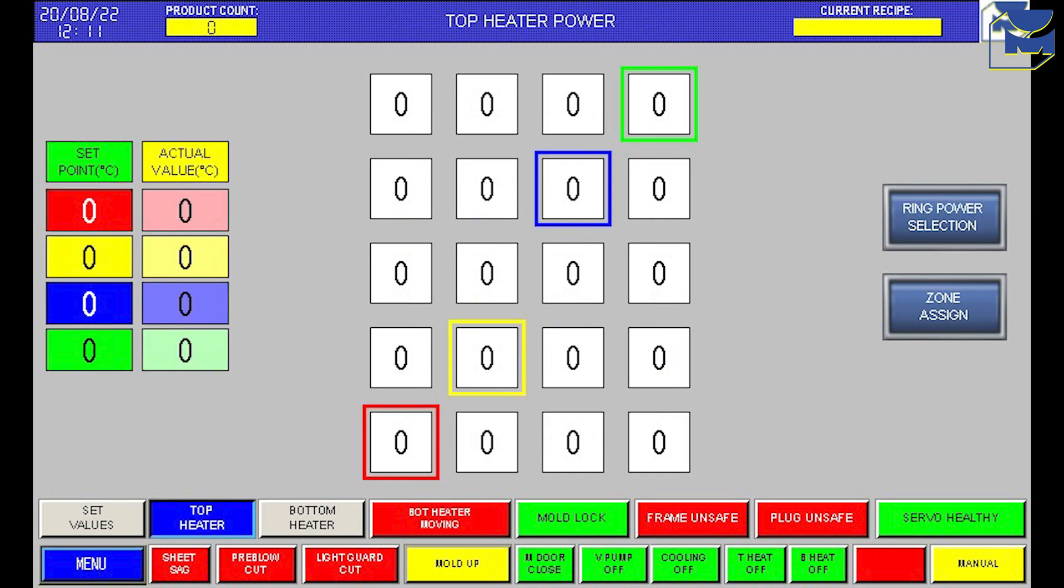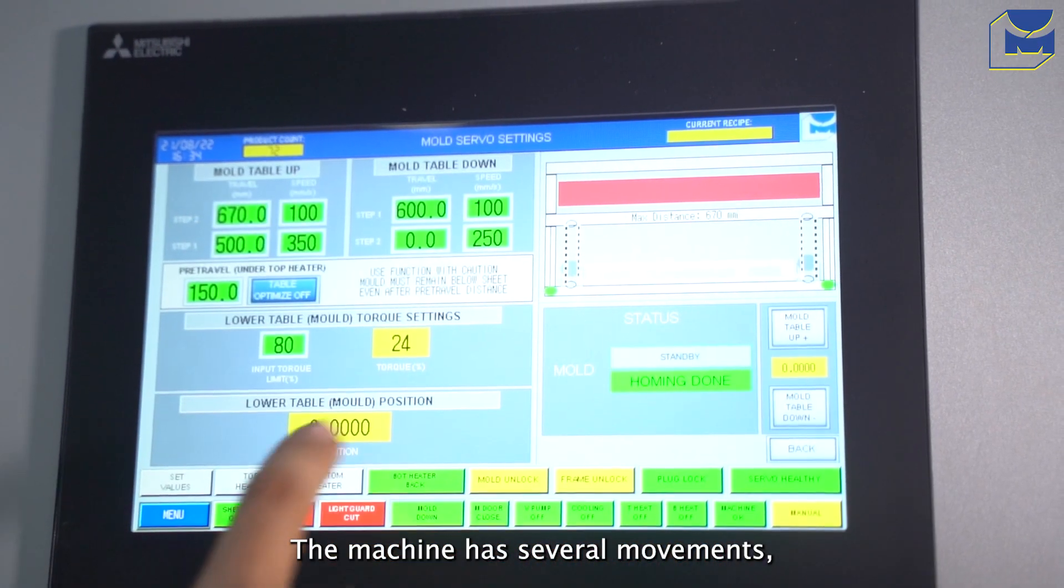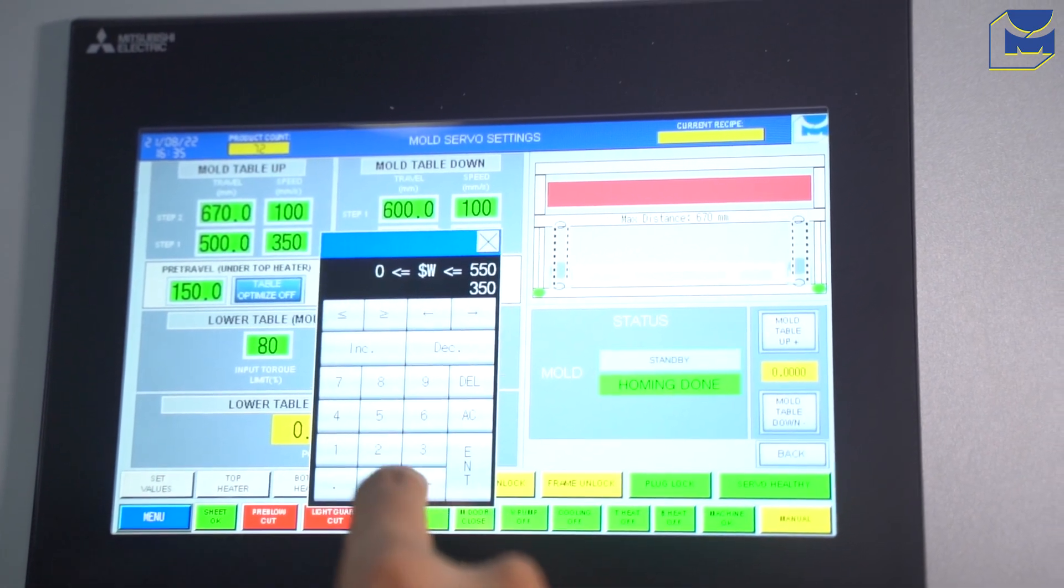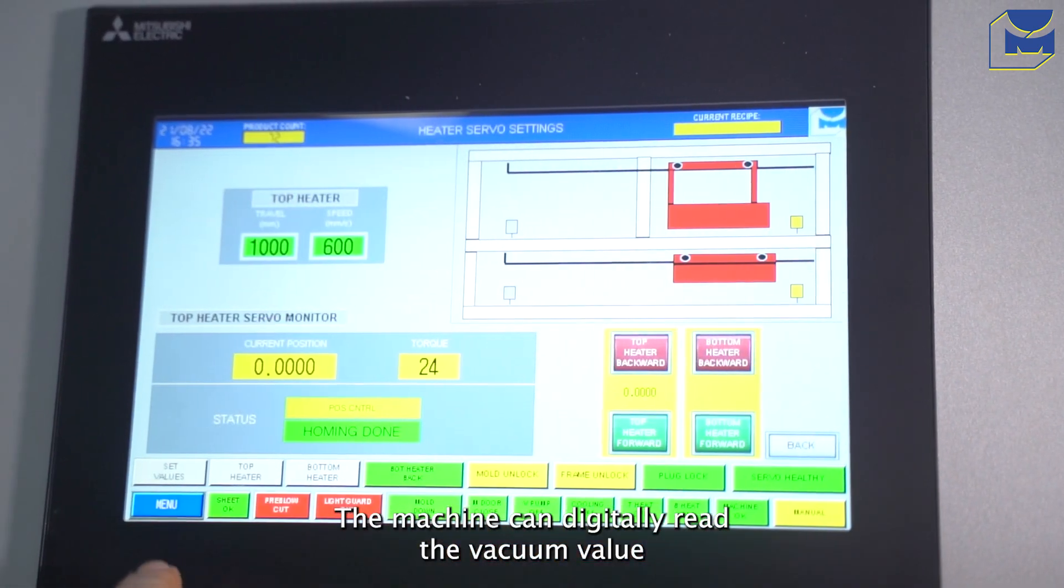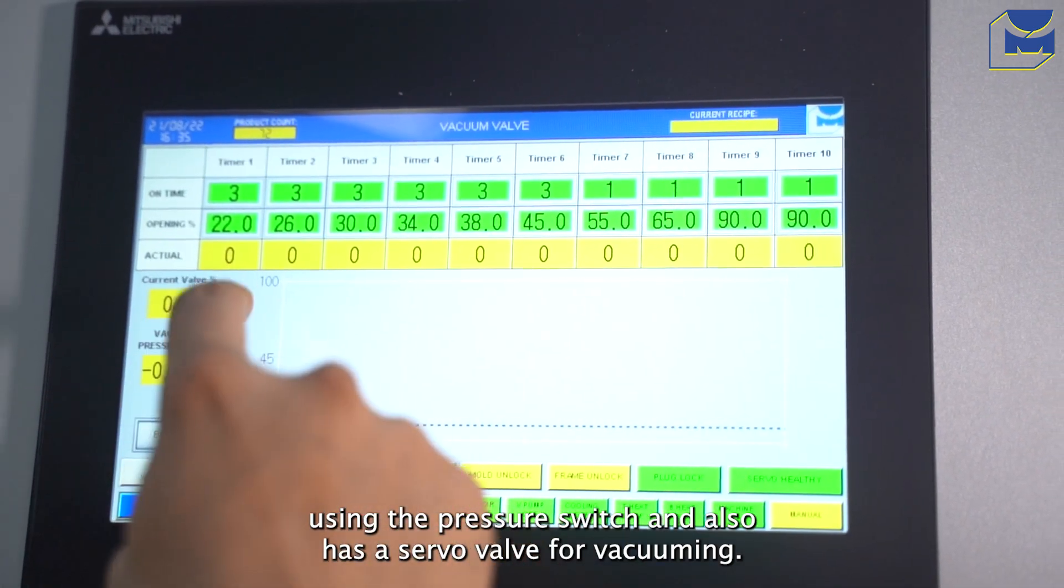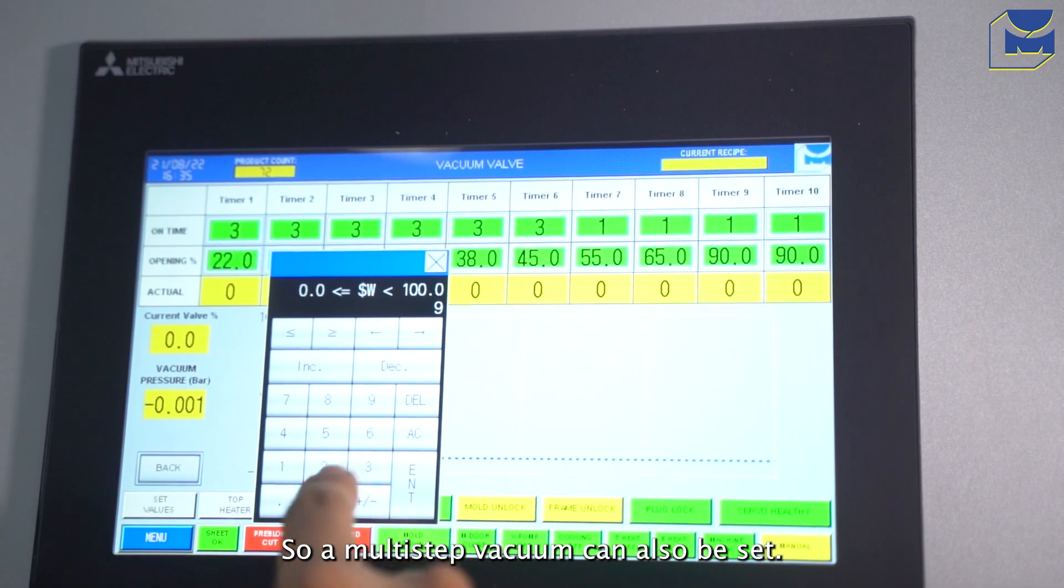Zones can be set. The machine has servo movements, so the acceleration and deceleration profiles can be set. The machine can digitally read the vacuum value using the pressure switch and also has a servo valve for vacuuming, so a multi-step vacuum can also be set.